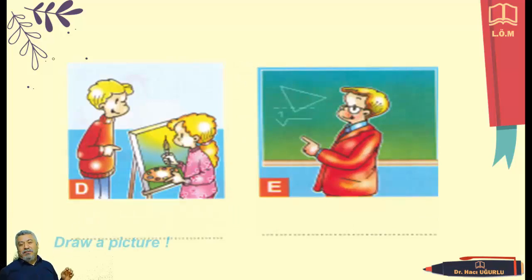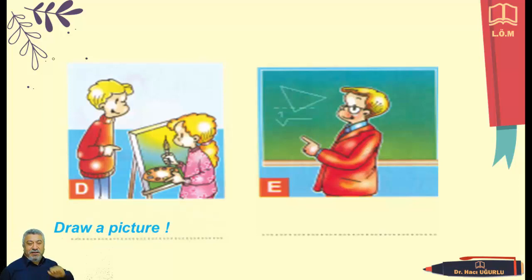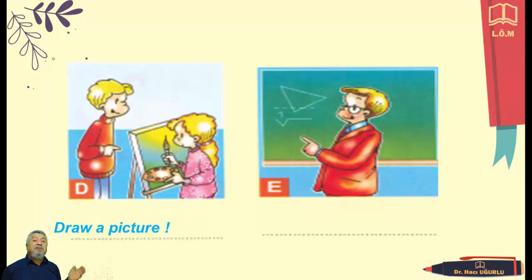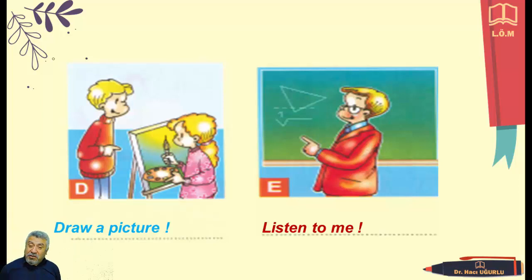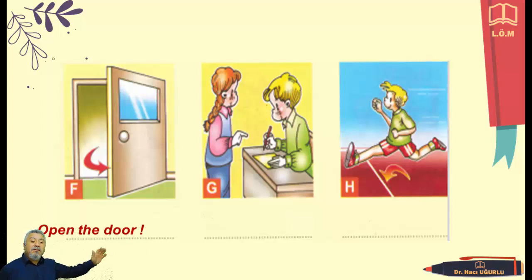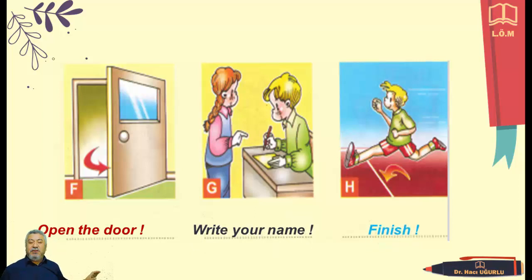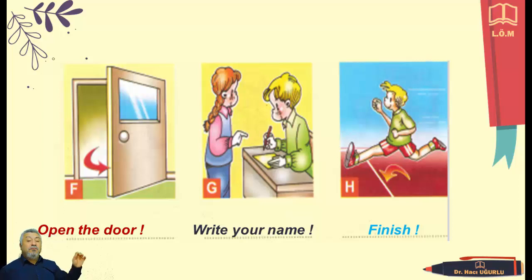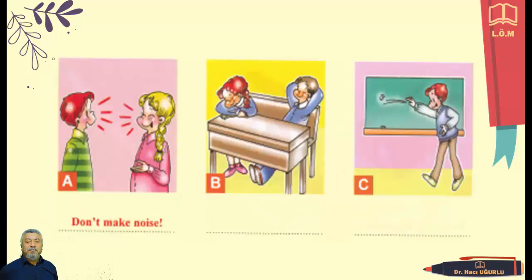And again, we have got two pictures. What can we say? Draw a picture — the girl is drawing a picture. And the second picture, a handsome man — I think he is a teacher — what can he say? Listen to me. So: draw a picture, listen to me. And we have got three pictures: open the door, write your name, and finish. All of them are imperative sentences. No subject — we start directly with verbs.